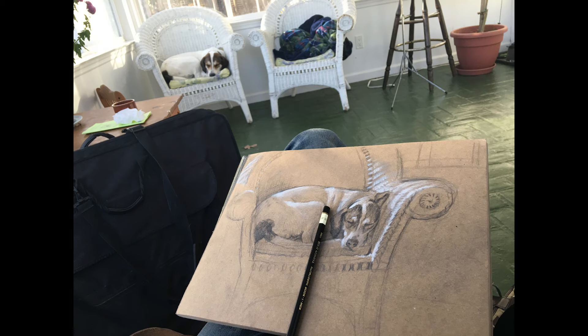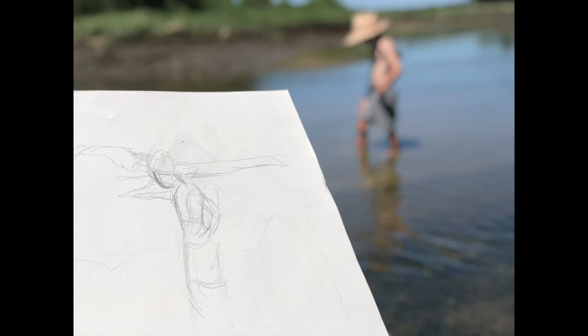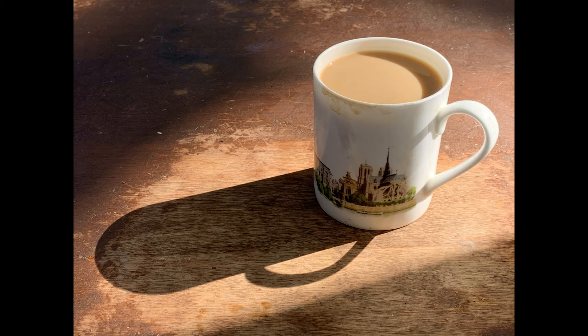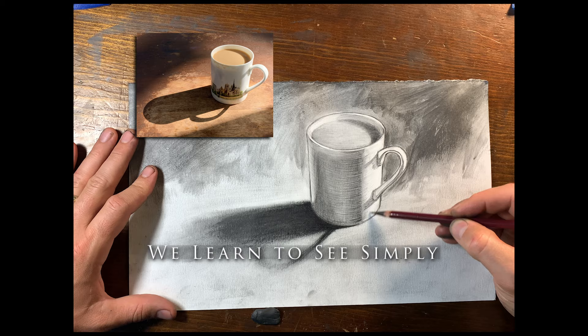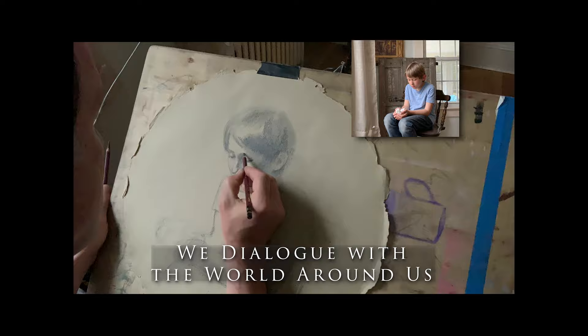The world around us inspires us, but how can we draw and paint what we see? We learn to see simply. Drawing and painting is a visual language, and ideas such as shape and light are our words — words which we can learn and apply to the world around us.